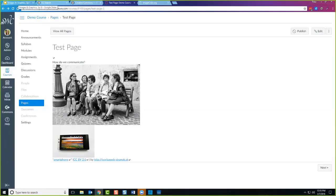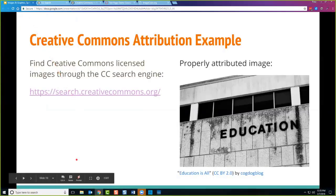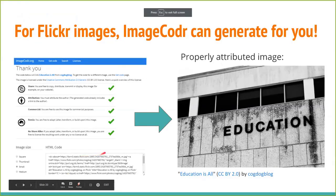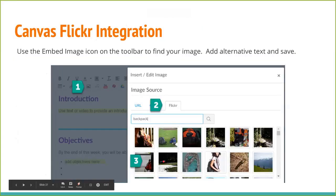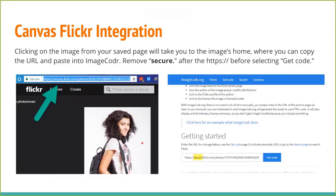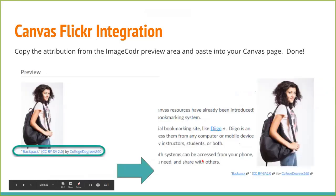There's one other kind of Creative Commons licensing that is really helpful, and we haven't covered it yet. These examples in the slides match up with what we were just doing — we used the Canvas Flickr integration, grabbed that URL, took out the word 'secure' with the period, and got the code to put right into a page. These slides will refresh your memory and walk you through how to do those steps.